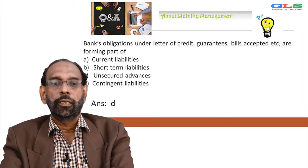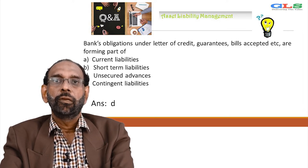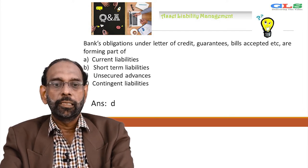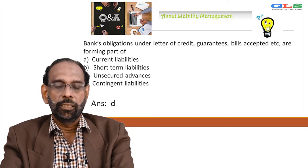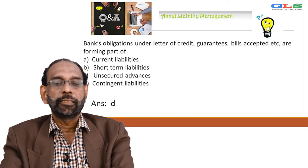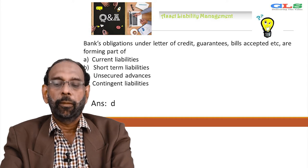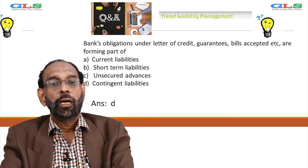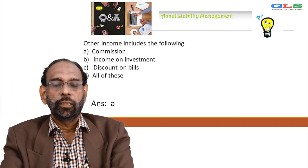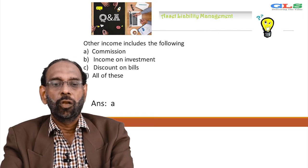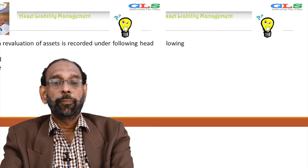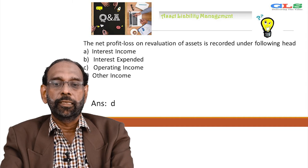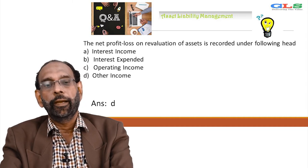Bank's obligations under letter of credit, guarantees, bills accepted are forming part of — current liabilities, short term liabilities, unsecured advances, or contingent liabilities. Answer is D, that is contingent liabilities. Other income includes the following — commission, income on investment, discount on bills, all of the above. Answer is A.